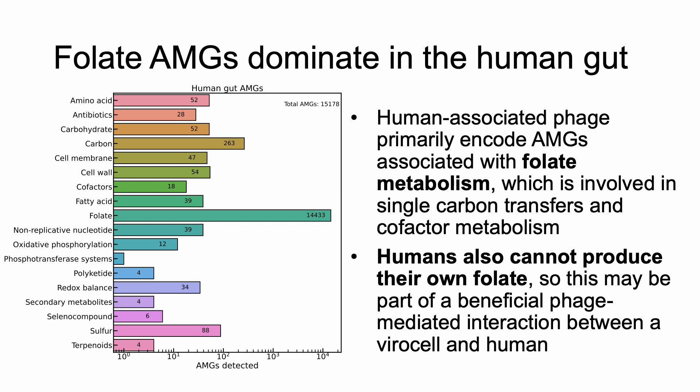Folate metabolism is involved in single carbon transfers, which makes folate metabolism a branch for many metabolisms, including cofactor, secondary, and nucleotide metabolisms. An interesting point is that humans cannot produce their own folate and therefore typically rely on the microbiome and diet for folate. This result is therefore significant because it suggests that phage-infected cells may be contributors to the levels of folate in the human gut.